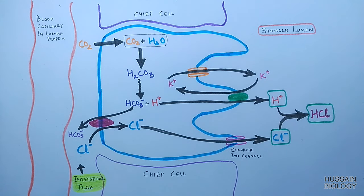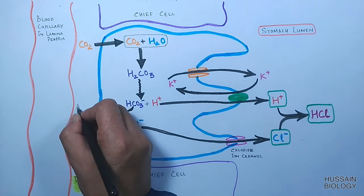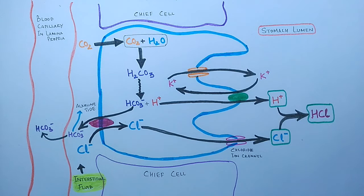Moreover, the bicarbonate ions in the interstitial fluid diffuse into the bloodstream. We call this alkaline tide. This concludes our mechanism of HCl secretion in the stomach.